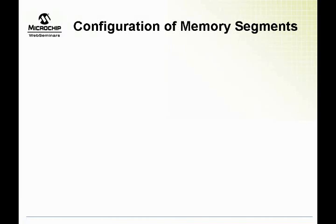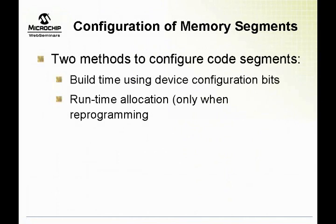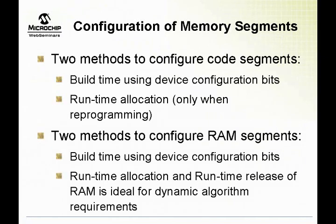Configuration of memory segments: there are two methods to configure code segments. Protected segments may be configured by writing to configuration registers. Configuration registers are populated by both ICSP and RTSP methods — that is, in-circuit serial programming and runtime self-programming method — if the device is originally unprotected. When using the in-circuit serial programming method, the hex file must contain definitions for the configuration registers, achieved by building the project with the configuration macros or setting the configuration bits using a dialog on MPLAB IDE. When reprogramming the device while the application is running, the runtime self-programming method may be used to program the security configuration registers.